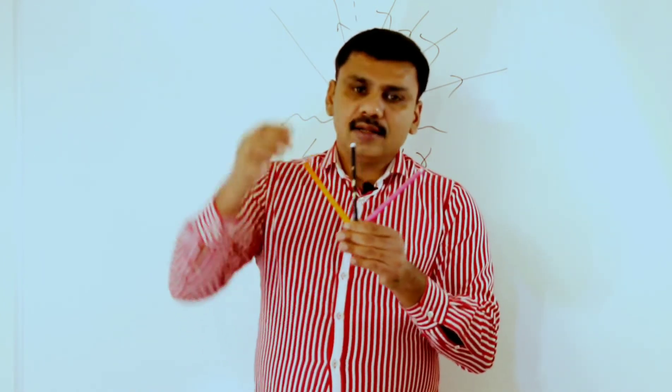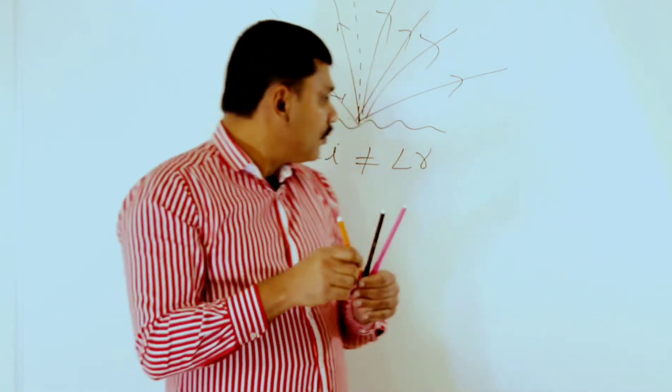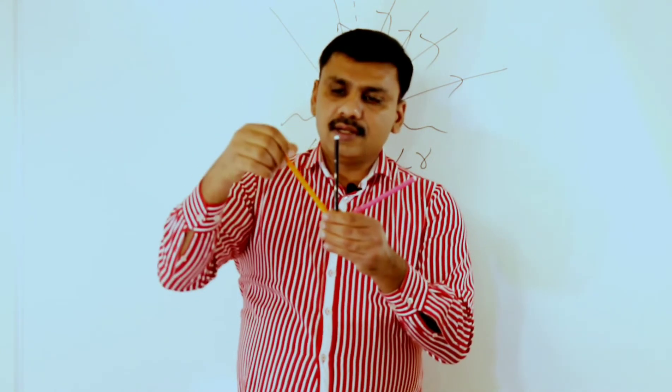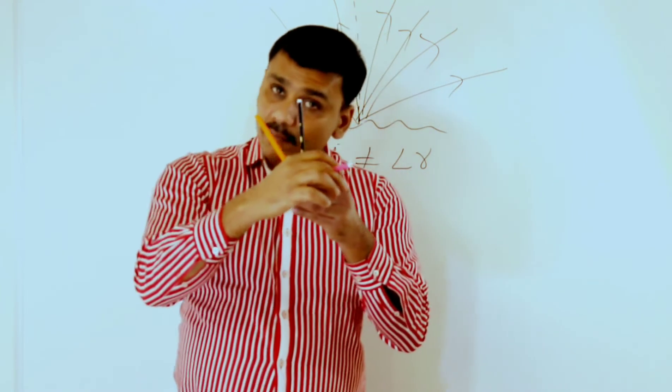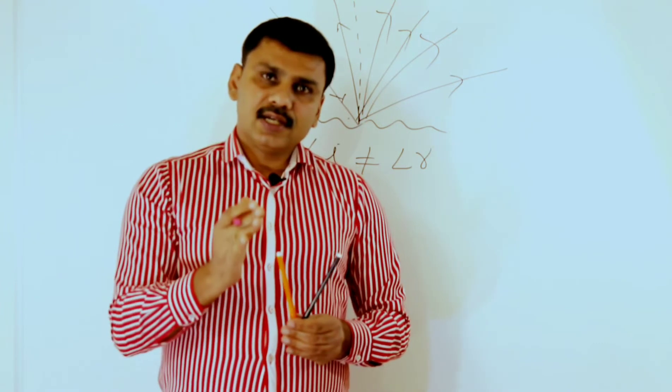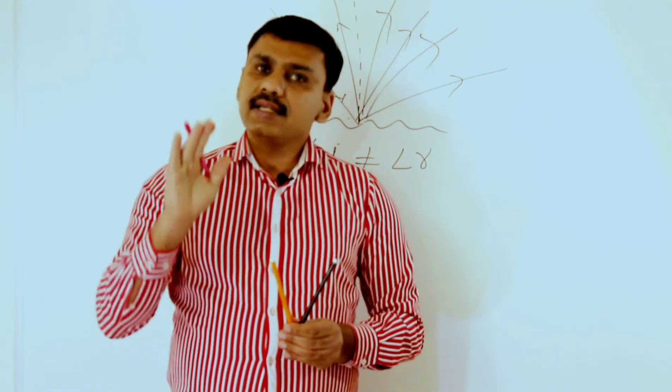In regular reflection, the reflected ray will not go to another plane — it and the incident ray and normal all lie in the same plane. In irregular reflection, however, the reflected ray can go to another plane or surface entirely. It will not stay in the same plane, and it can go in any direction.